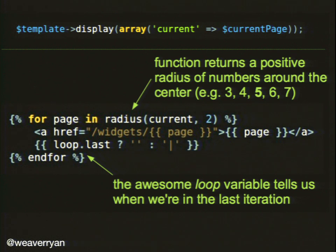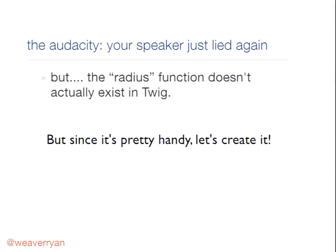For pagination, we can use a radius function — if the current page is five, it gives you an array of three, four, five, six, seven, and we iterate over that. There's that loop.last variable again — we want to add pipes between pages but no extra pipe on the end. Using the ternary syntax: loop.last ? '' : '|'. Twig also has the shorter ternary shorthand. The radius function doesn't actually exist, which is handy — I want to show you what a Twig extension looks like to create it.